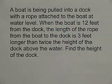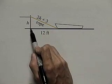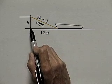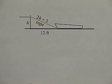Well, now it's your turn to try a problem. Pause the video and work the following problem, then restart it when you're ready to check your work. Here's what I want you to do. A boat is being pulled into a dock with a rope attached to the boat at water level. When the boat is 12 feet from the dock, the length of the rope from the boat to the dock is 3 feet longer than twice the height of the dock above the water. Find the height of the dock. Well, here's a picture that will help with this problem. The boat's 12 feet from the dock. This is the dock here. The dock is H feet above the water. The length of the rope is 3 more than twice the height of the dock. Pause the video and work this problem, then restart it when you're ready to check.